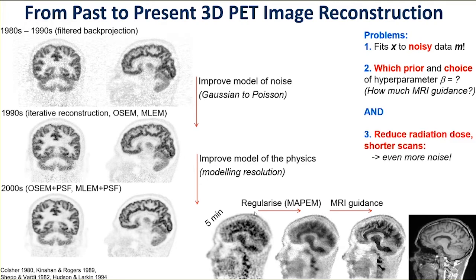Furthermore, we want to reduce the radiation dose to the patient — typically about 10 millisieverts from 370 megabecquerels of activity injected. We want to reduce that, particularly for healthy subjects or memory clinic patients. We're also looking to reduce acquisition time, and of course if we do that, noise is even more of an issue — so these aforementioned problems are even more pertinent as we go to lower injected dose and shorter scan time.